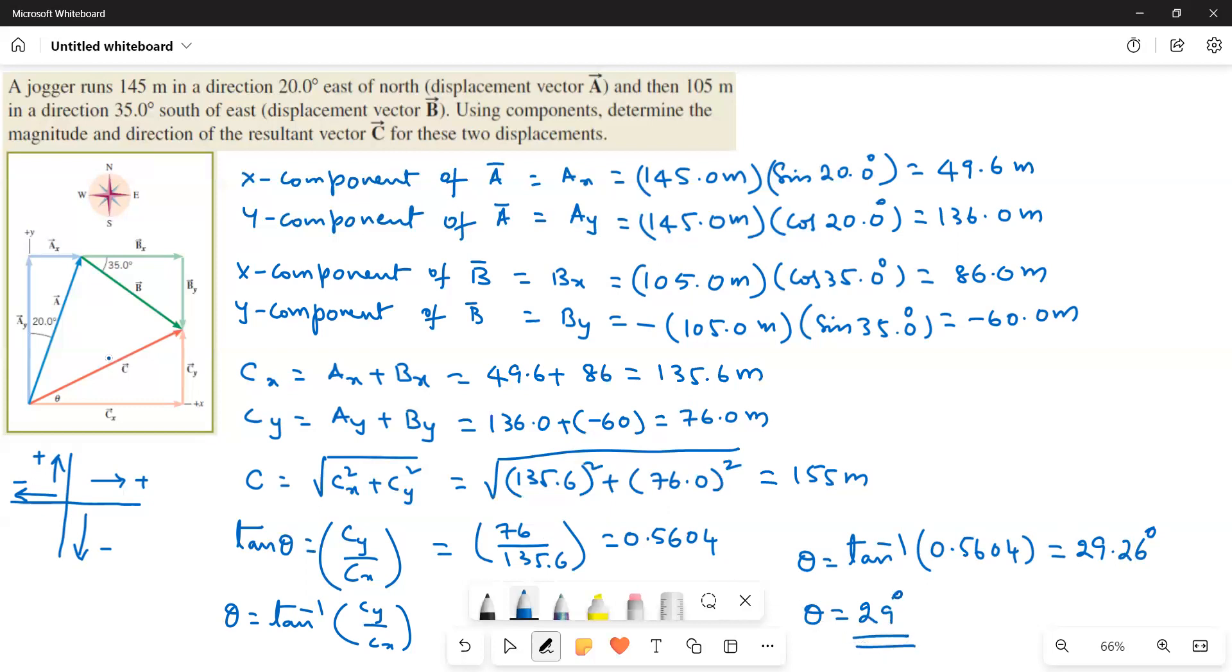So C bar value, this is 145, this is 105 and this is 155. And then this angle is 29 degrees. This is the answer for this question.